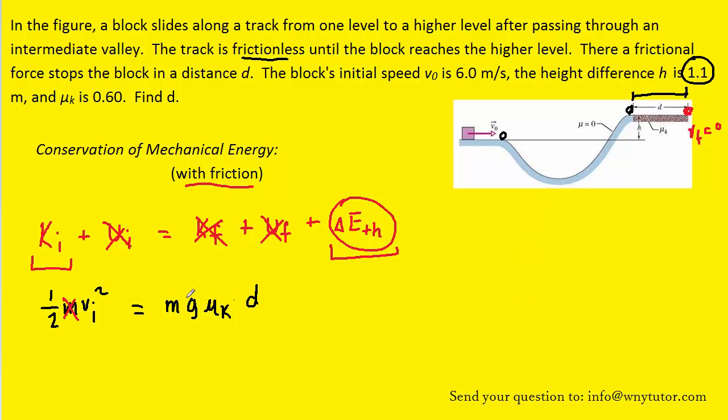Now mass appears in both terms of the equation, so we can eliminate it. We were given the coefficient of kinetic friction in the question. G, of course, is 9.8. Remember, the initial velocity in this case was the final velocity as the object had slid across that frictionless surface and got to this point right here. And we had found that velocity. It turned out to be 3.8 meters per second. So let's plug in all the known values.